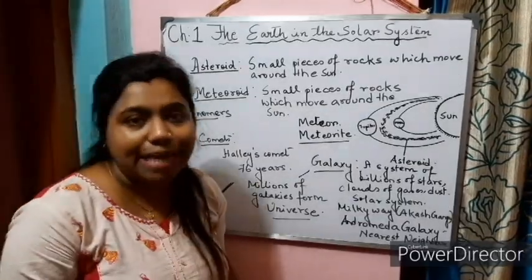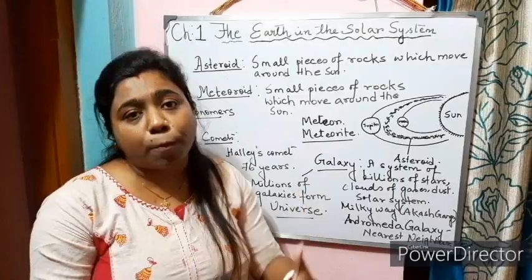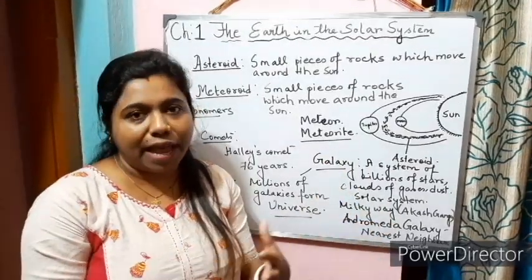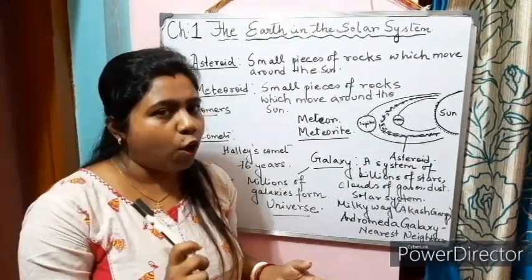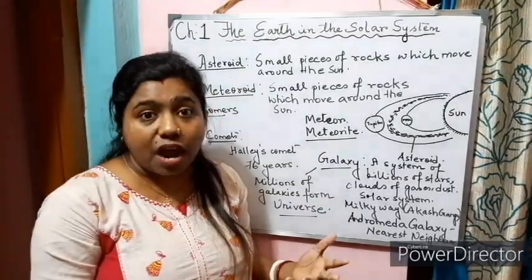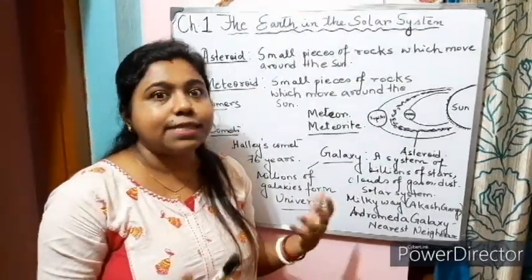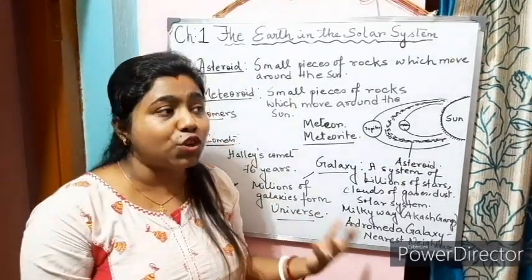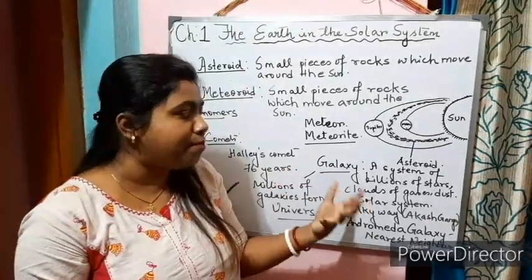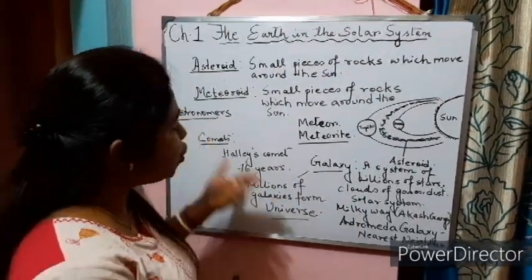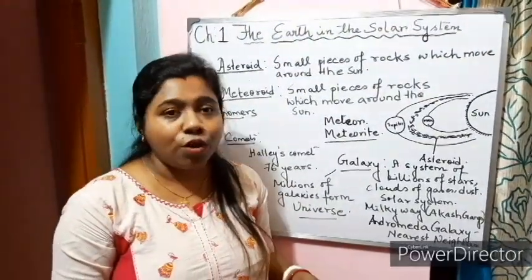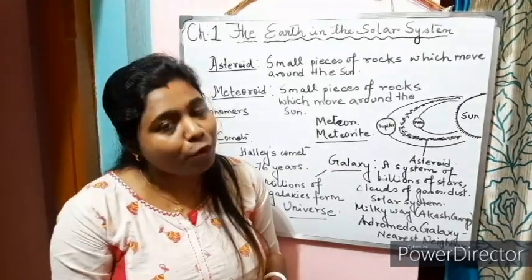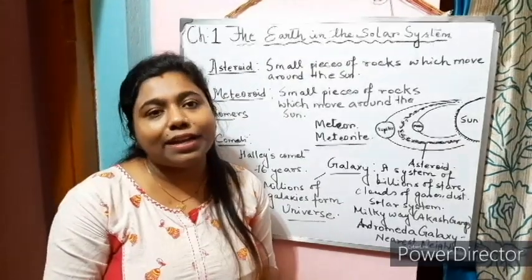With this, we are completing the chapter. I already explained the first topic - celestial bodies, stars, planets, constellations, the pole star, the solar system, dwarf planets, asteroids, meteoroids, Moon, satellites, natural satellites, man-made satellites, galaxy, comets, astronomers, and the universe. I hope you all understood the chapter. If you have any problems, you can ask your queries in the group or directly contact me. Thank you.